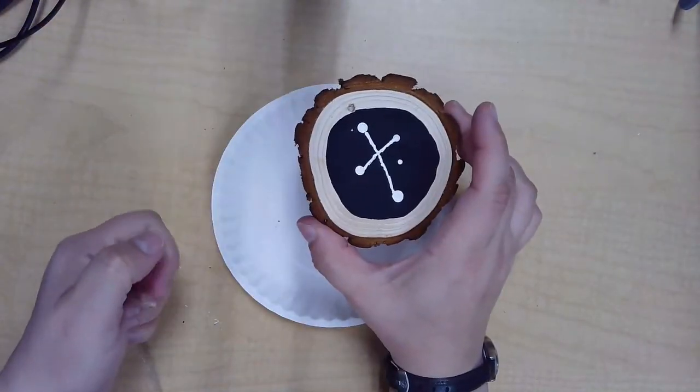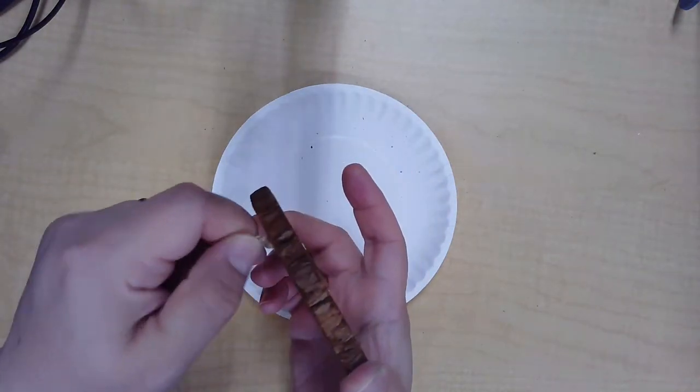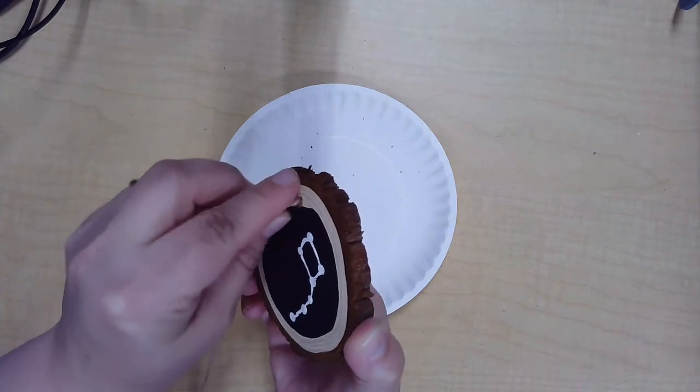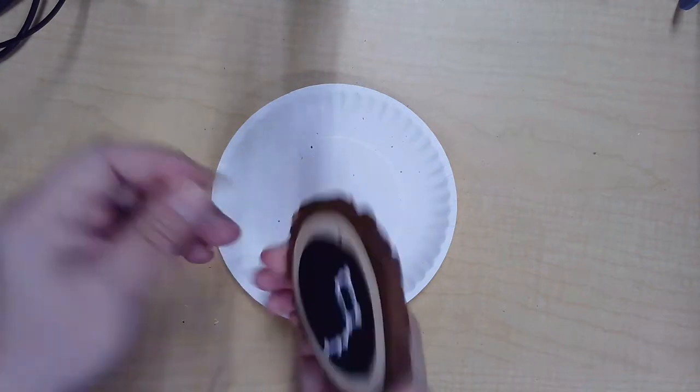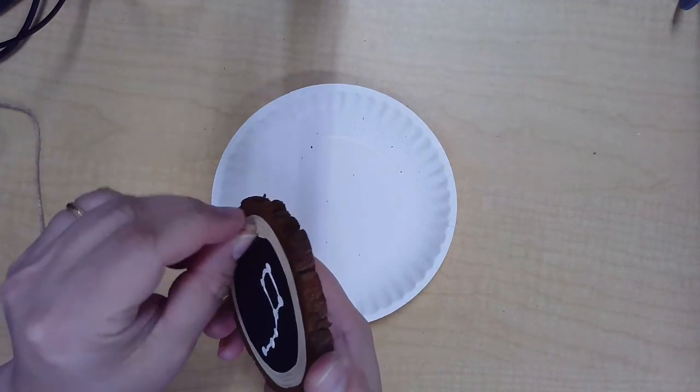On the other side I painted the southern cross and my little dipper is dry. And so all that's left to do is to put your string up, thread your twine through the hole.